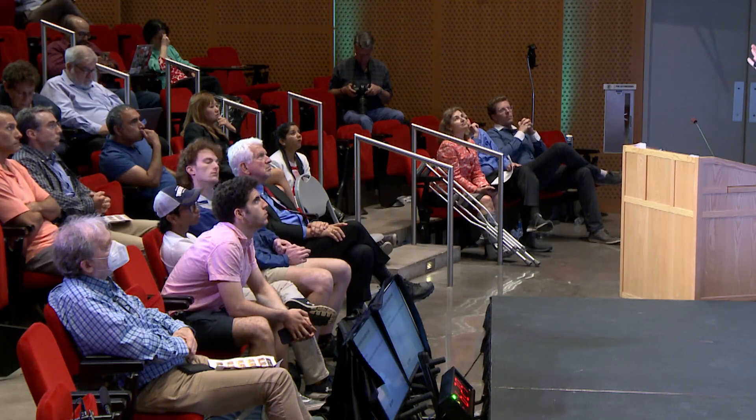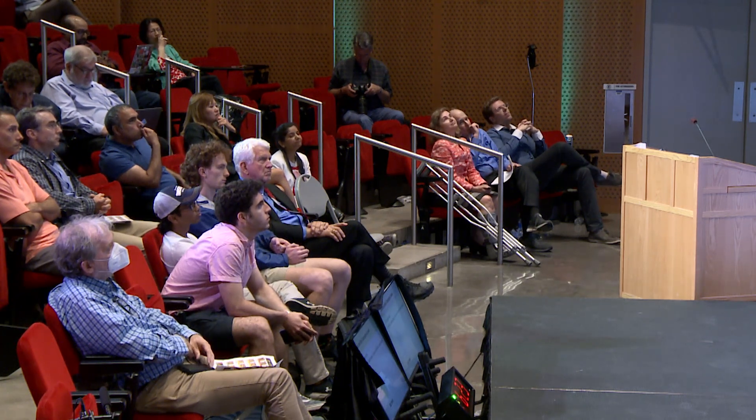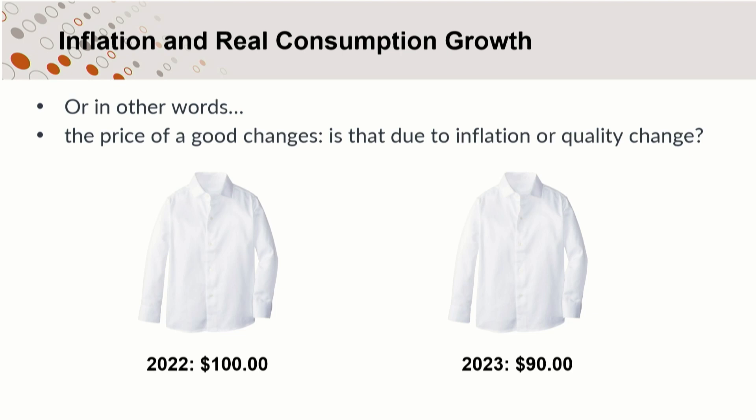Think about this. Imagine that last year you went to the store and bought one of the more boring products on the shelf — a simple men's white cotton shirt — and it costs you $100. This year you go to the same store, same shelf, and you can find the same thing for $90. All other things being equal, if you're the kind of person who buys a white shirt every year, you now have $10 in your pocket that you didn't have before. That's terrific.